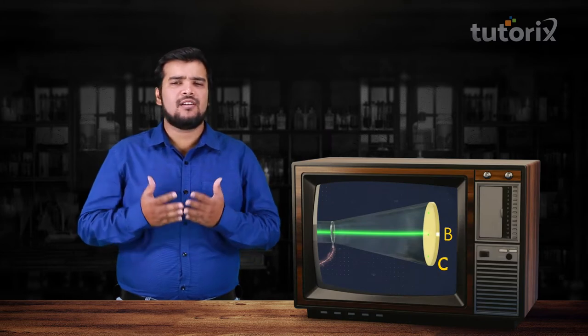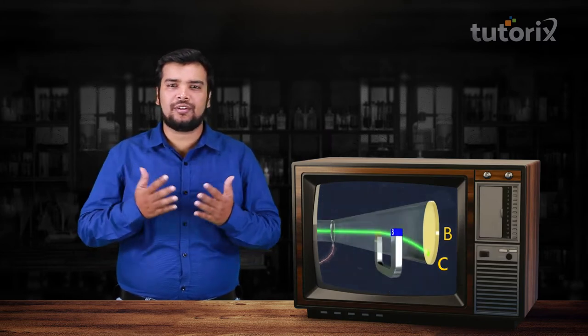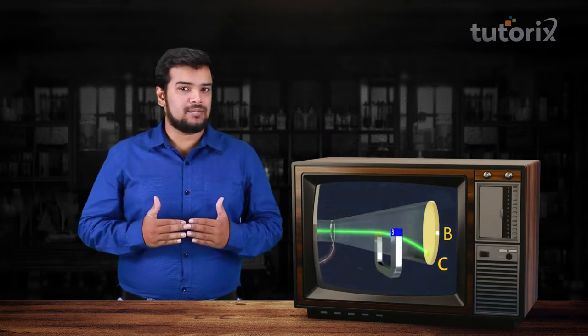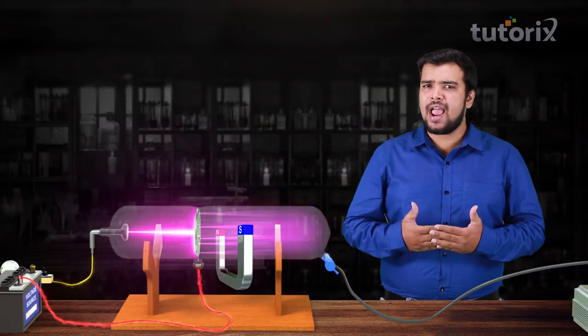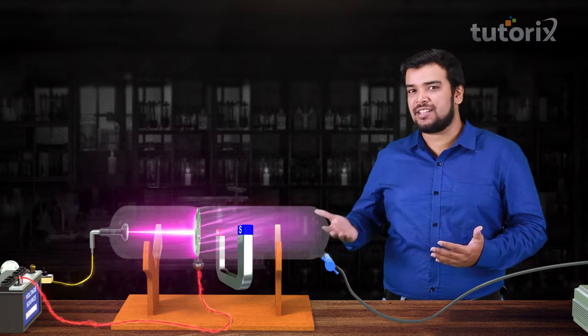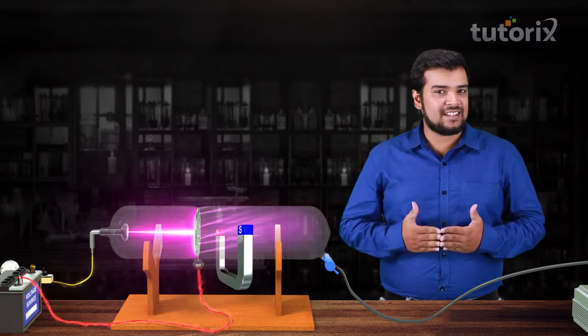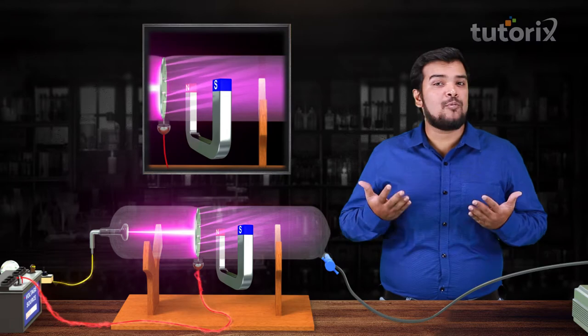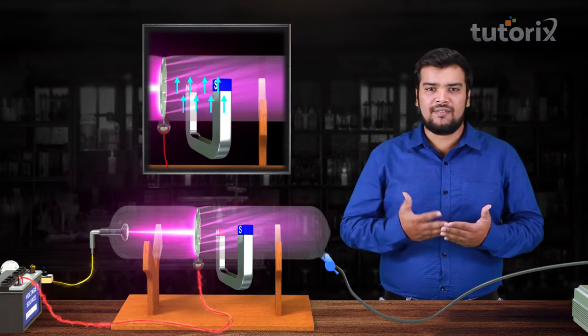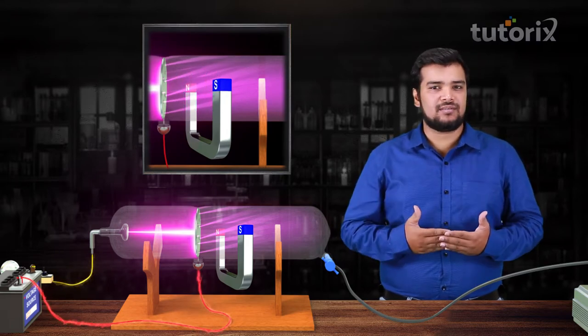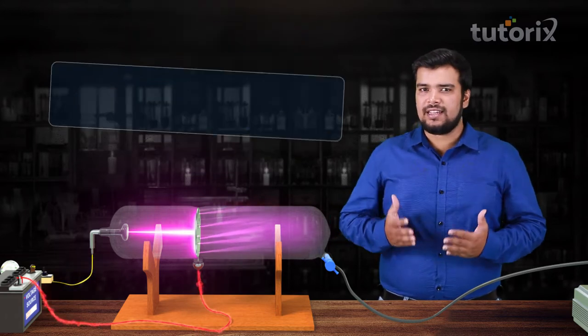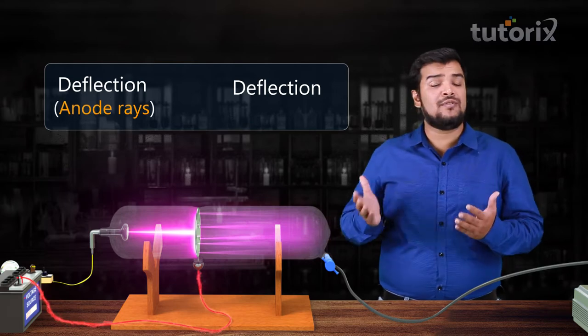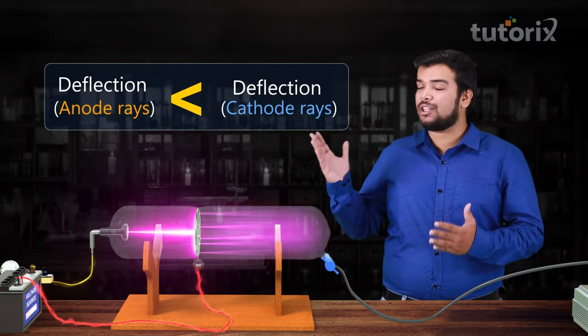So now, if you remember from the previous video that when we brought a magnet close to the cathode rays, they were bent downward because they were negatively charged. So what do you think will happen when you bring a magnet close to these positively charged rays? Well, you are right—these rays will bend upward because the direction in which rays will deflect depends upon the nature of the charge. Now if you notice carefully, you will see that the deflection in case of anode rays is way less compared to the cathode rays.